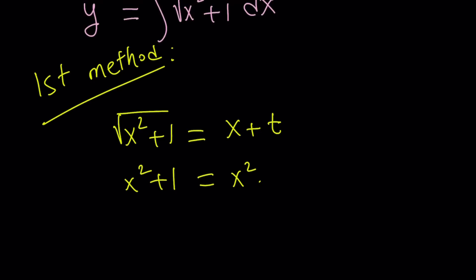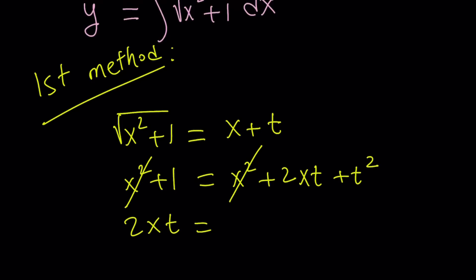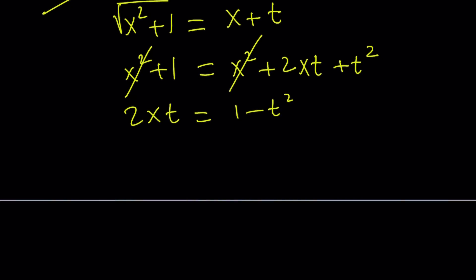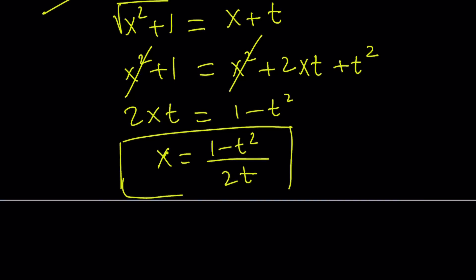When you do that, you're going to be able to write x in terms of t, which is a really cool thing to do. So we square both sides, x² cancels out, and then I want to isolate x. So 2xt = 1 - t². Divide both sides by 2t — to be or not to be — and x equals (1 - t²) / 2t. We were able to write x in terms of t, and we're going to use substitution.